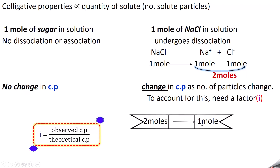The normal or theoretical colligative property is the colligative property found through the formula — for example, π = CRT, or relative lowering of vapor pressure equals mole fraction of solute. Using these formulas we calculate the theoretical colligative property, assuming one mole of sugar or one mole of NaCl. But what is actually in the solution — observed experimentally — gives the observed number of particles, which may be different. Therefore the observed colligative property will be different.